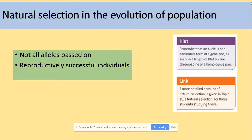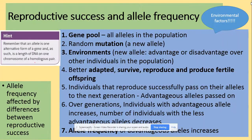This is really important for past paper questions: reproductive success and allele frequency. Allele frequency is affected by differences in reproductive success. The gene pool contains all the alleles in a population. Random mutations will take place, so new alleles will arise.